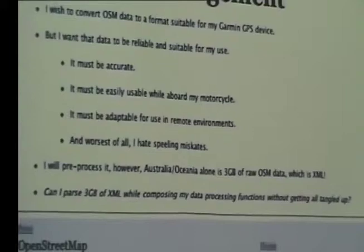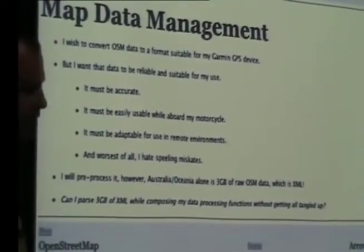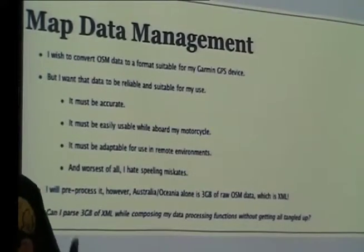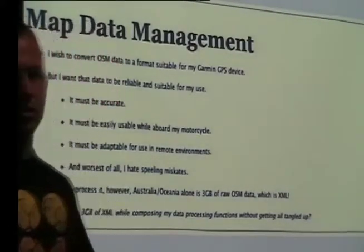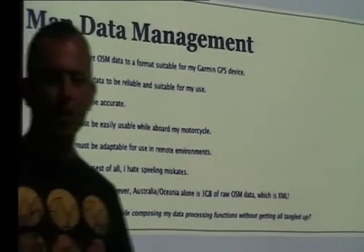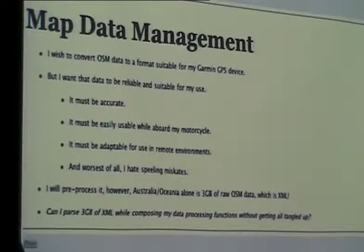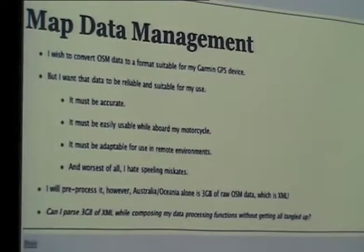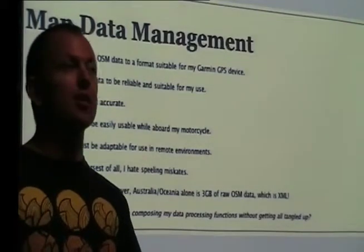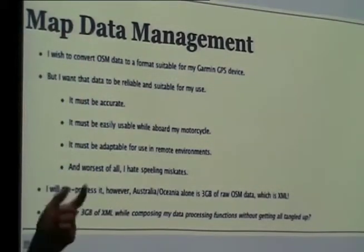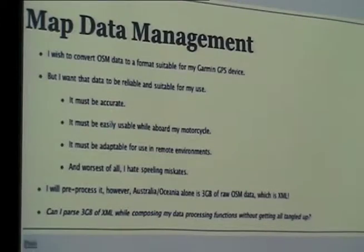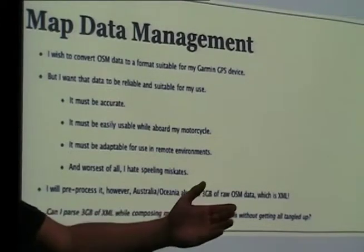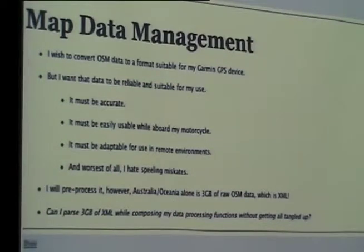However, just Australia and Oceania - out to Fiji and up to Papua New Guinea - that's three gigabytes of XML. The question is: can I parse this three gigabytes of XML, replace the spelling mistakes, and do a lot of stuff to this data before I put it on that device? I want to do that in a way that is efficient, and I need it to be composable. I need to separate the parsing from my operations. A good example is someone spelt 'street' without an R - I want to replace all S-T-E-E-T's with S-T-R-E-E-T. I want to have this little string-to-string function and just plug it in, and out pops my processed data.